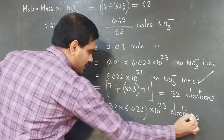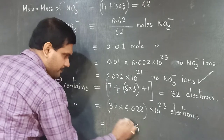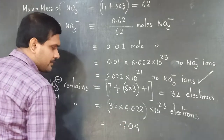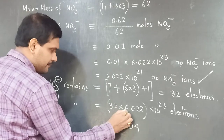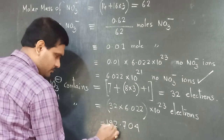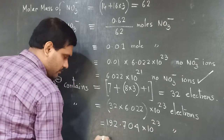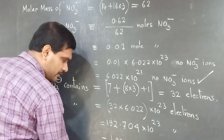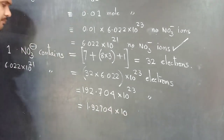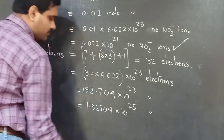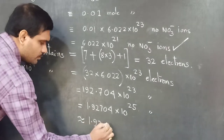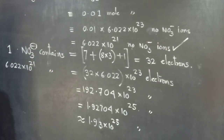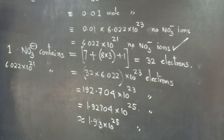So 6.022 × 10²¹ NO3⁻ ions contain 32 × 6.022 × 10²¹ electrons. Calculating: 192.704 × 10²¹ = 1.92704 × 10²³ electrons. You can approximate it to 1.93 × 10²³ electrons. If there are small calculation errors, correct those.